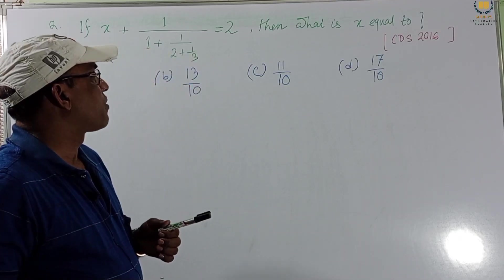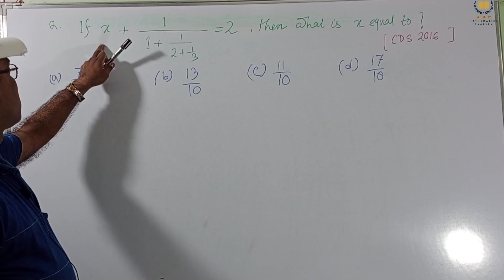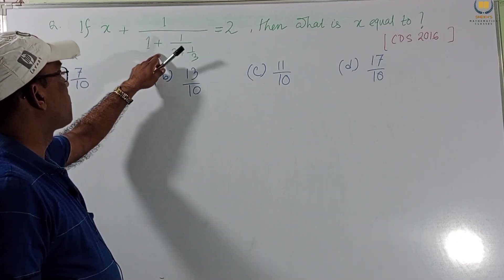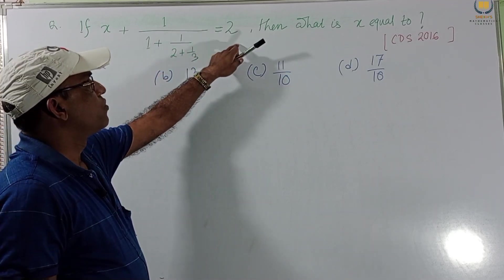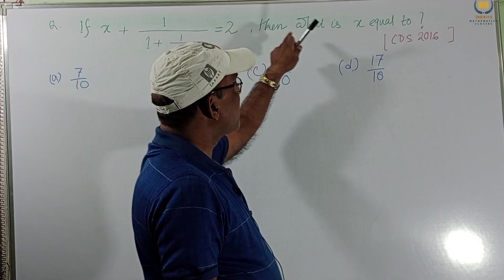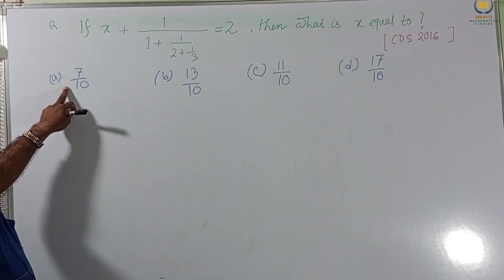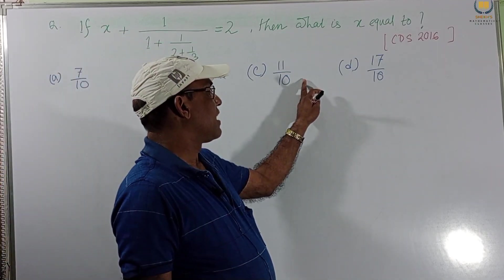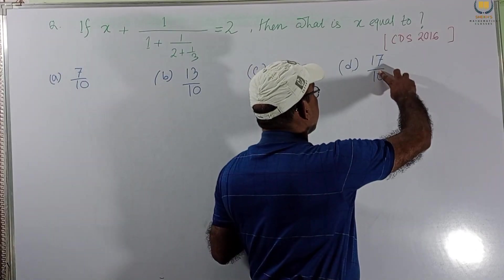Now we consider the remaining problems, also solve some problems. Now we consider this problem: If X plus 1 by 1 plus 1 by 2 plus 1 by 3 equal to 2, then what is X equal to? The options given: A 7 by 10, B 13 by 10, C 11 by 10, and D 17 by 10.